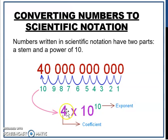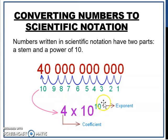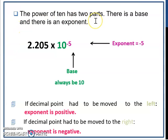The coefficient — yang ni lah, dia punya coefficient. And the power of 10 here. You have the base and you also have the exponent. Contoh yang di sini — this number is very large, so we convert these numbers into scientific notation. It turns out to be 4 times 10 to the power of 10. The base is always 10 and the exponent here is negative 5.